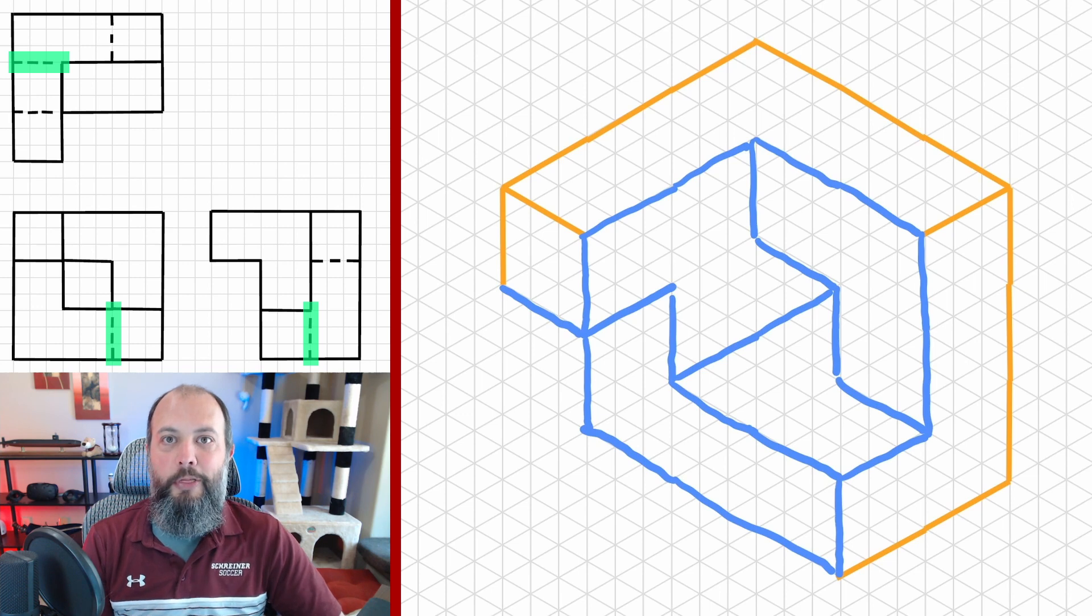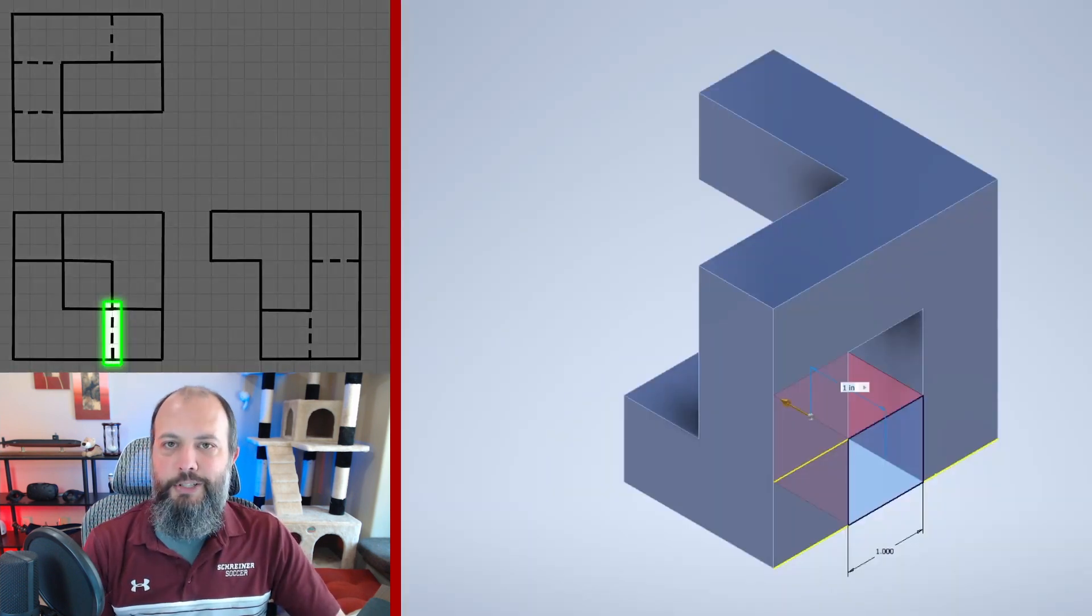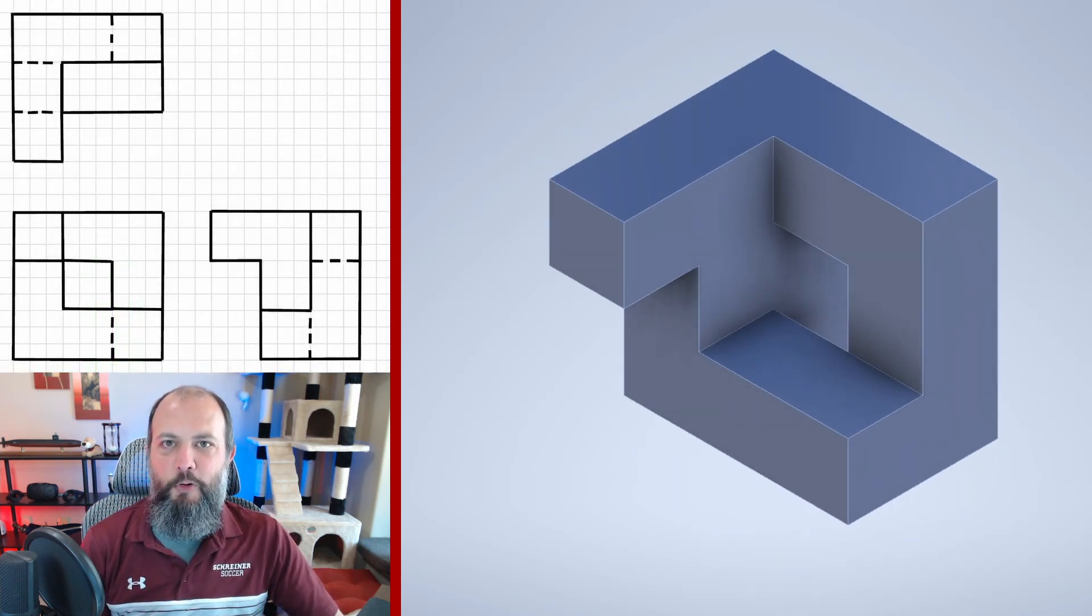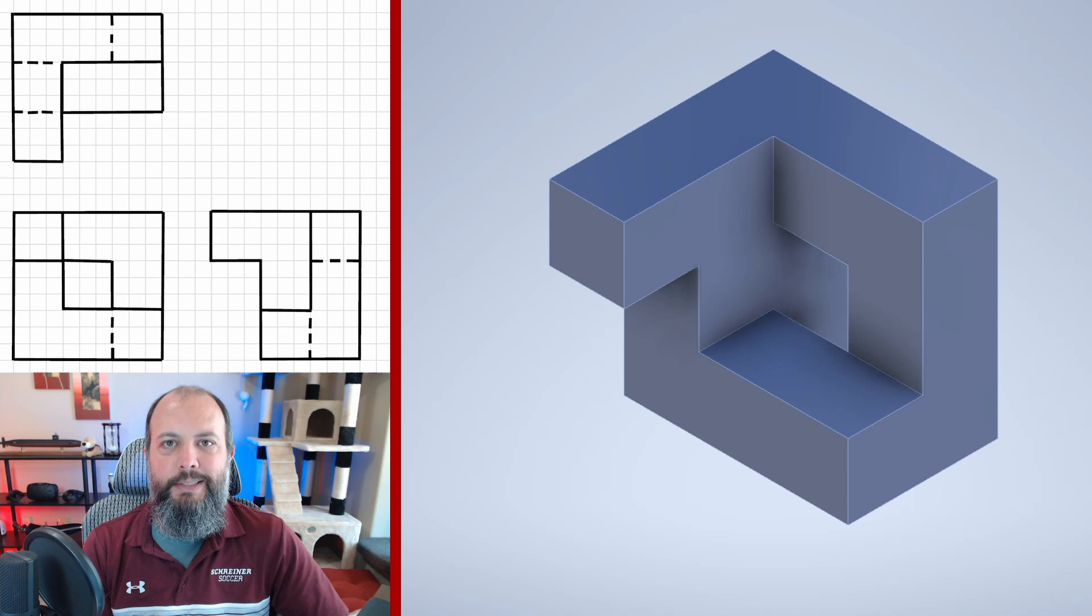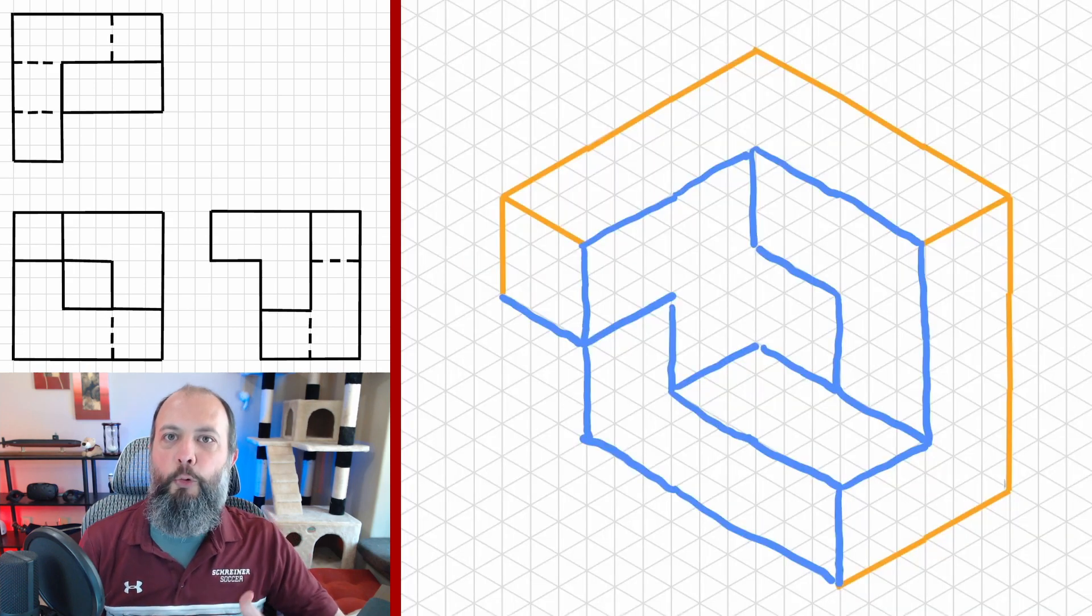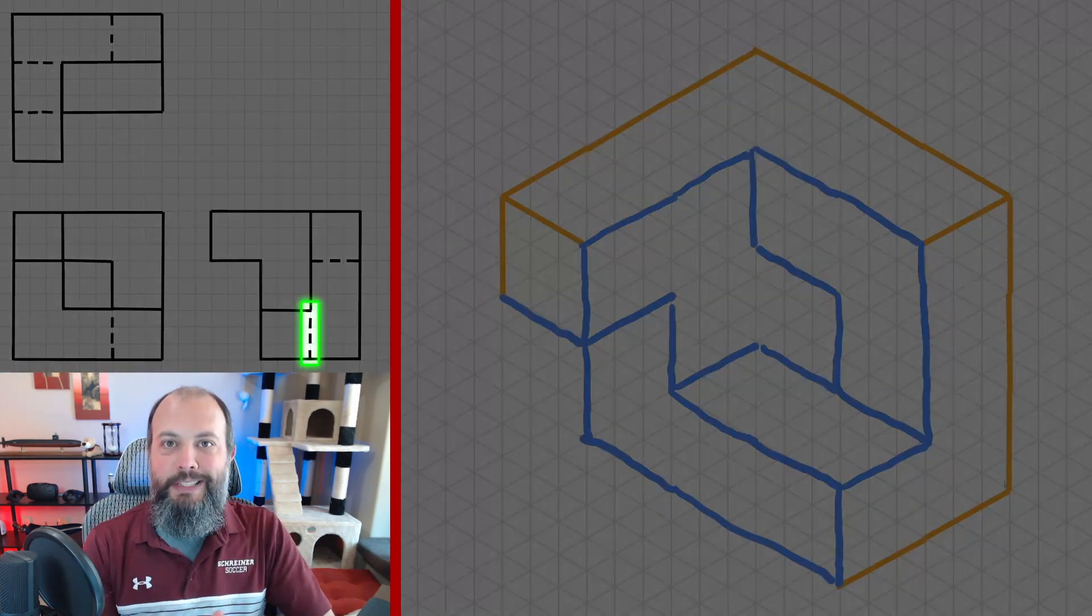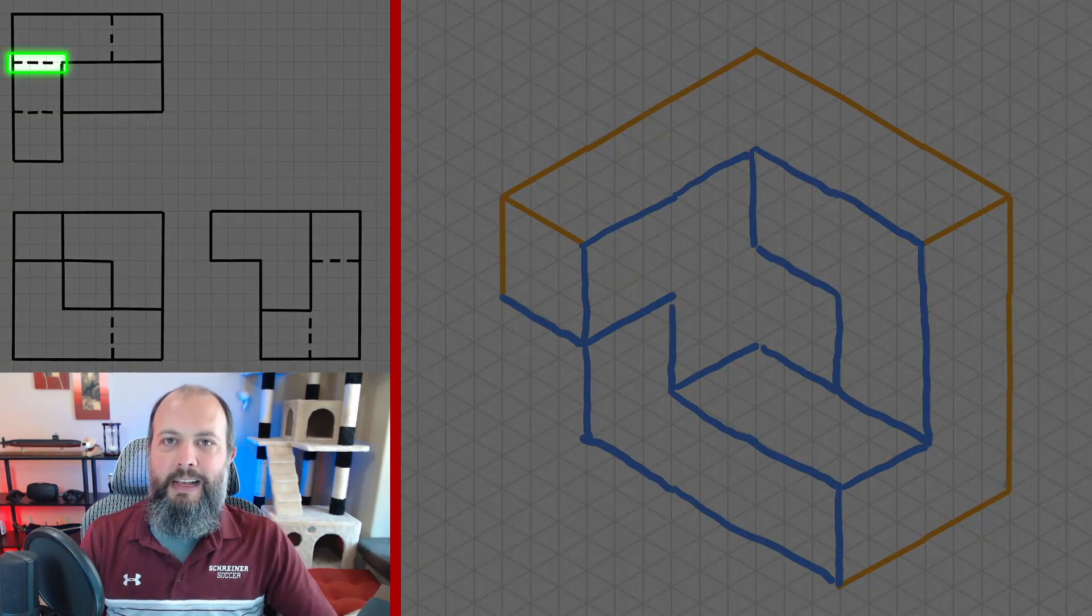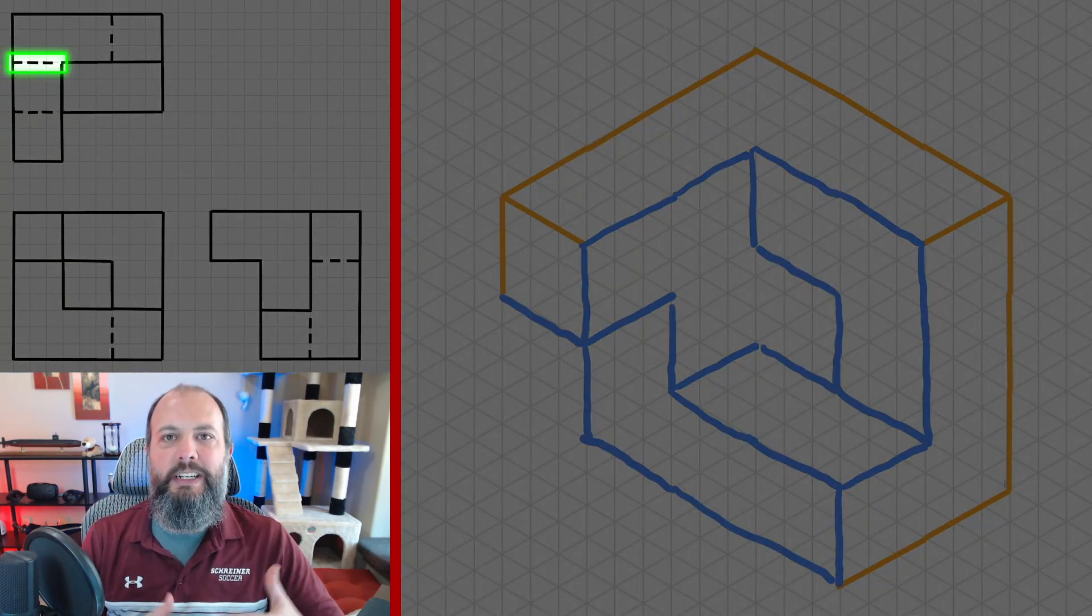There's still hidden lines on all three views that are not represented yet on the drawing. The easiest one is going to be the front view hidden line. It can only be accomplished by removing this bottom back piece. Removing that piece did help us out on the right side view because now this hidden line exists based on removing that block. So the only thing left is the one hidden line on the top view.